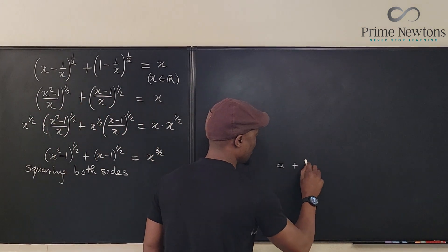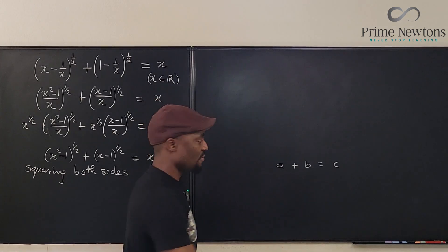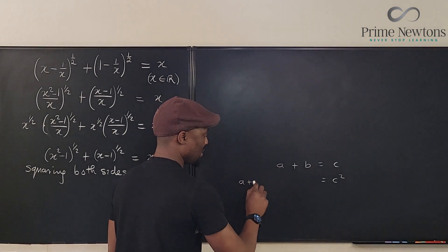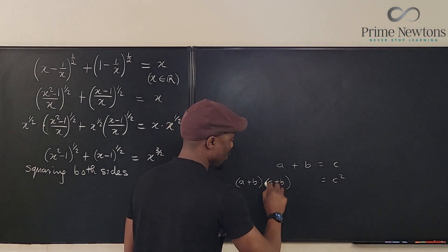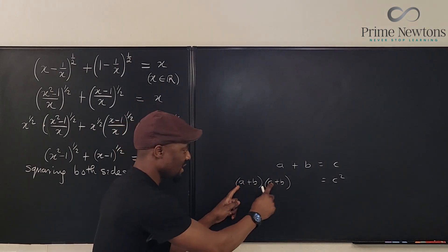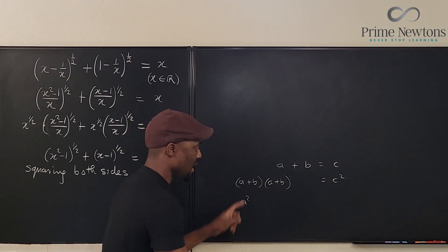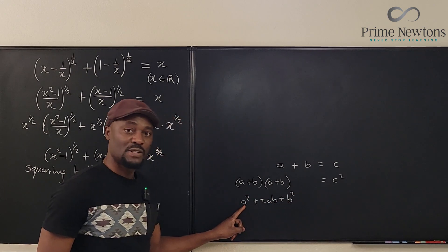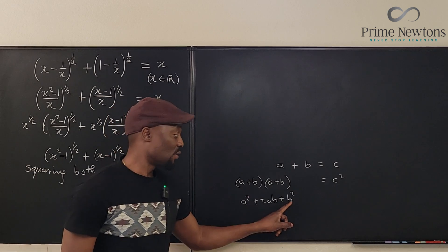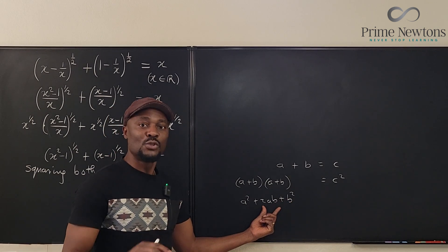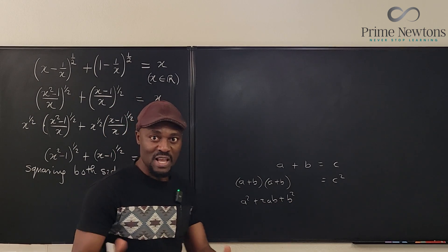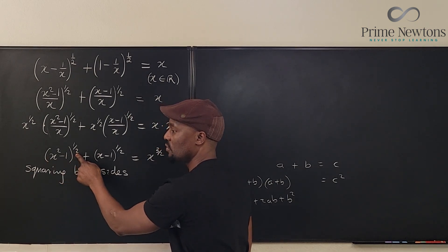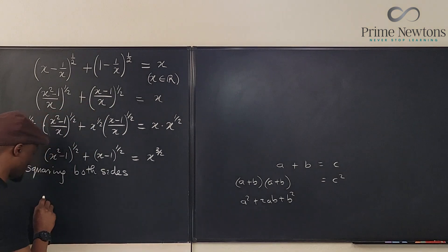Note what happens when we square both sides. If we have a + b = c, then the right side becomes c squared. On the left, (a + b)² expands to a² + 2ab + b². So we always get the square of the first term, the square of the second term, and twice the product of the two terms in the middle. Squaring the first term removes the square root and gives us x² - 1.